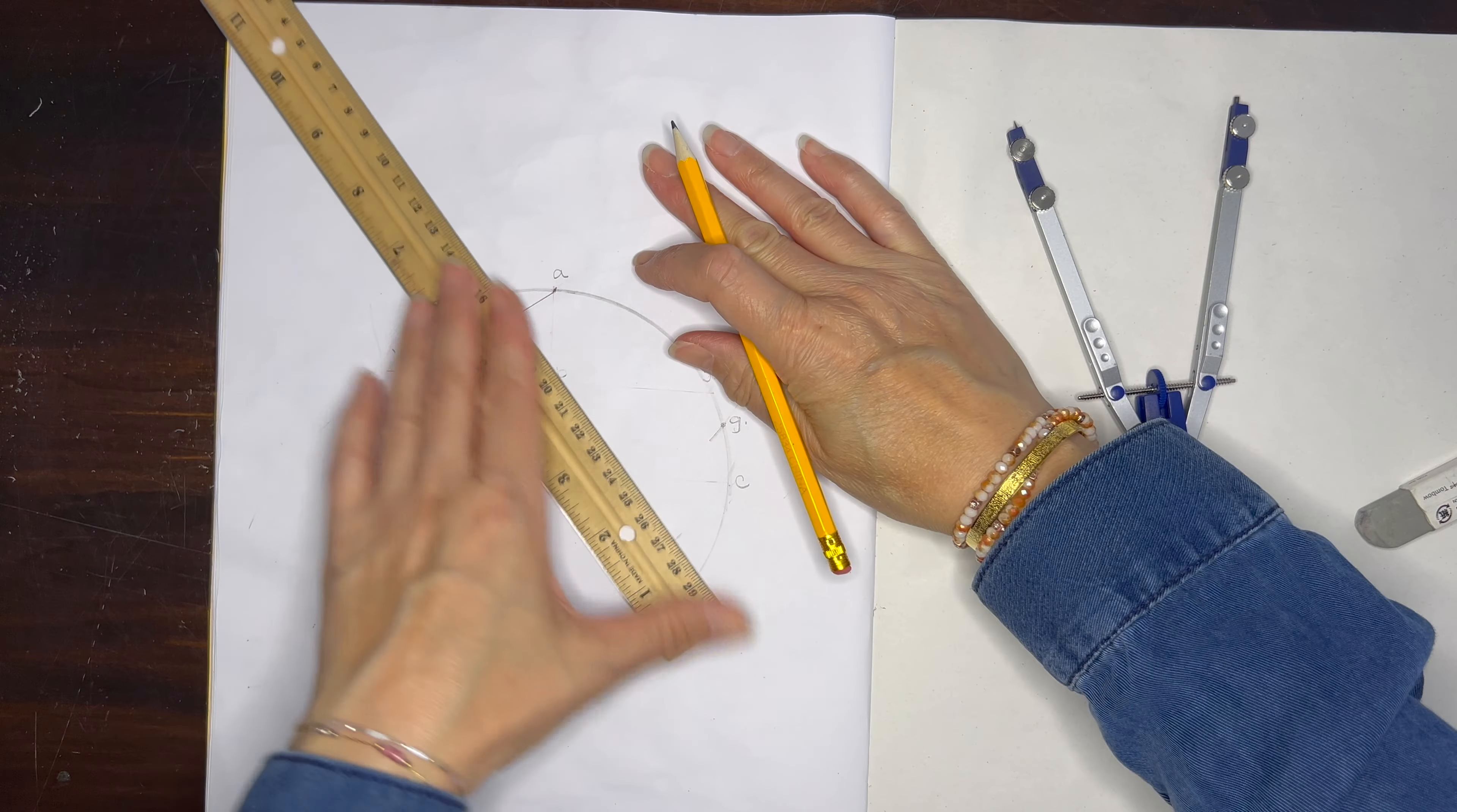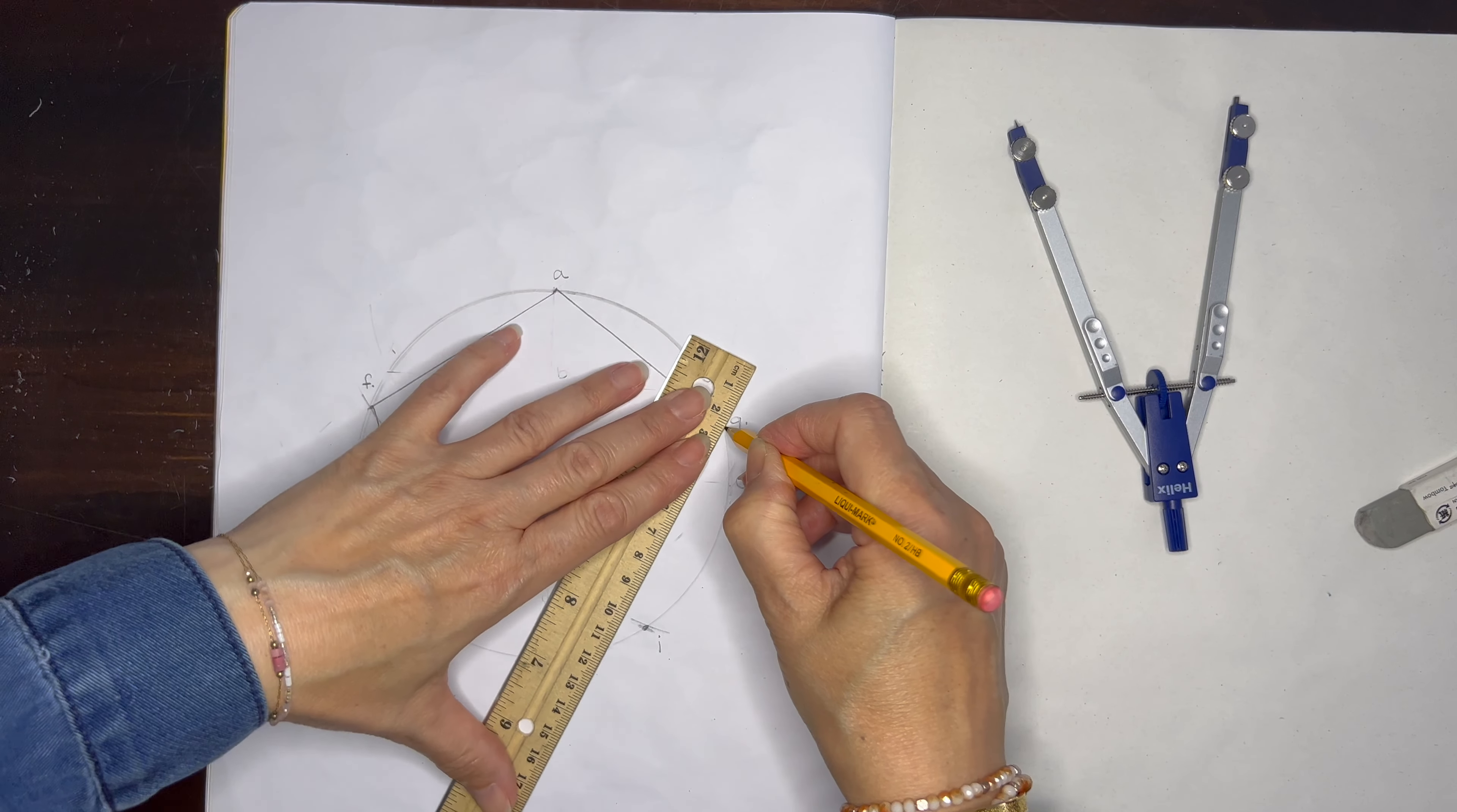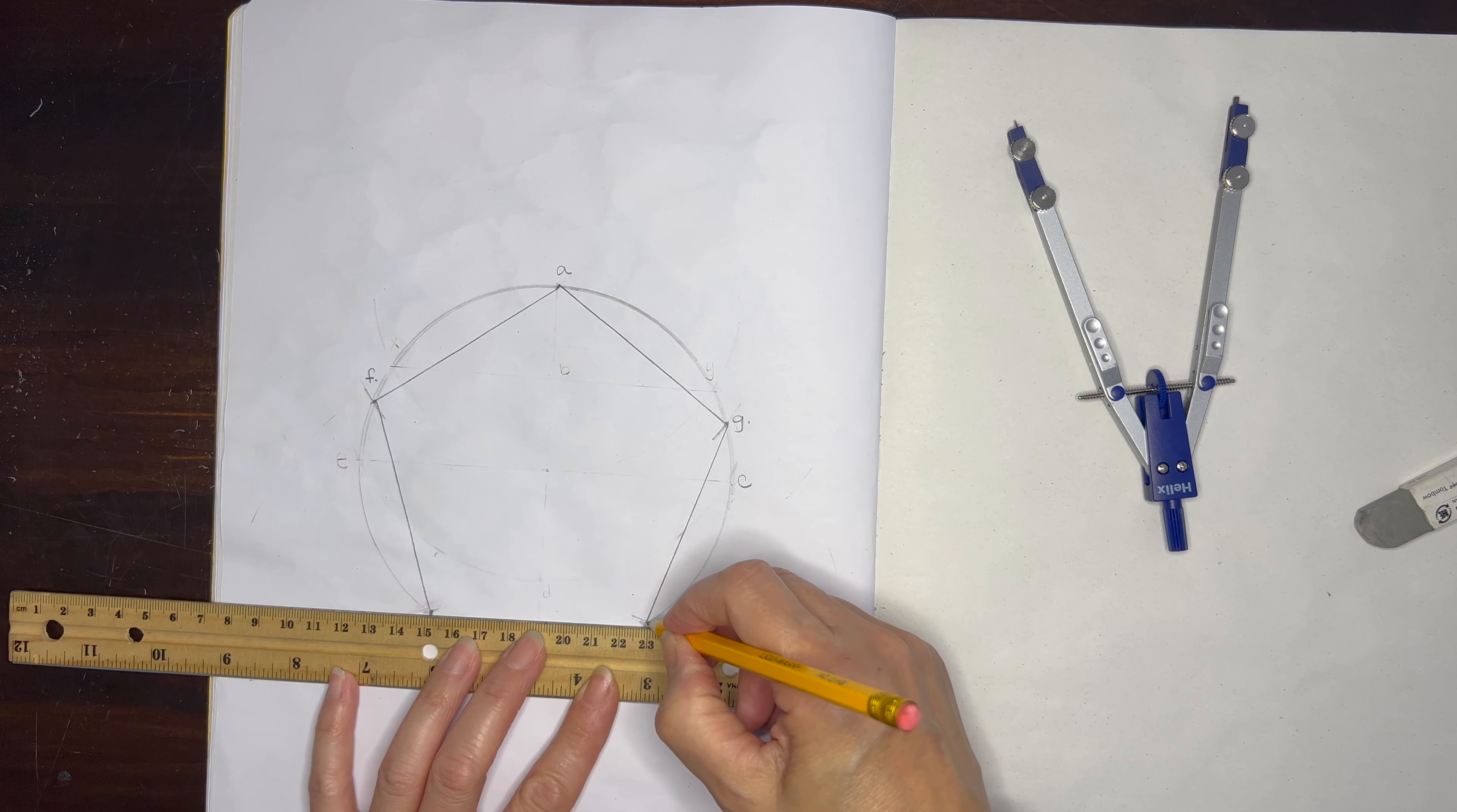Of all of the divisions of a circle this one does take a little bit of time to master, but it is really thrilling being able to construct a perfect pentagon within a circle with just your straight edge, a pencil, and a compass.